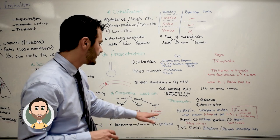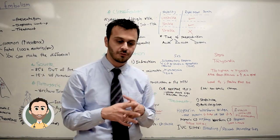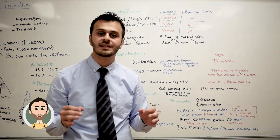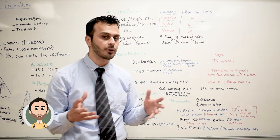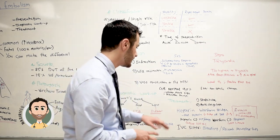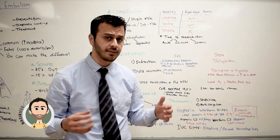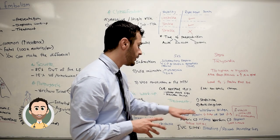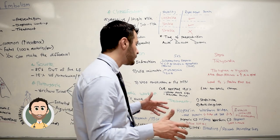Now, moving on to the treatment of pulmonary embolism. Once you have a confirmed pulmonary embolism, you first need to stabilize the patient. If the patient has hypotension, give them fluids and vasopressors as needed. If the patient is hypoxic, supply them with oxygen until they're stabilized.